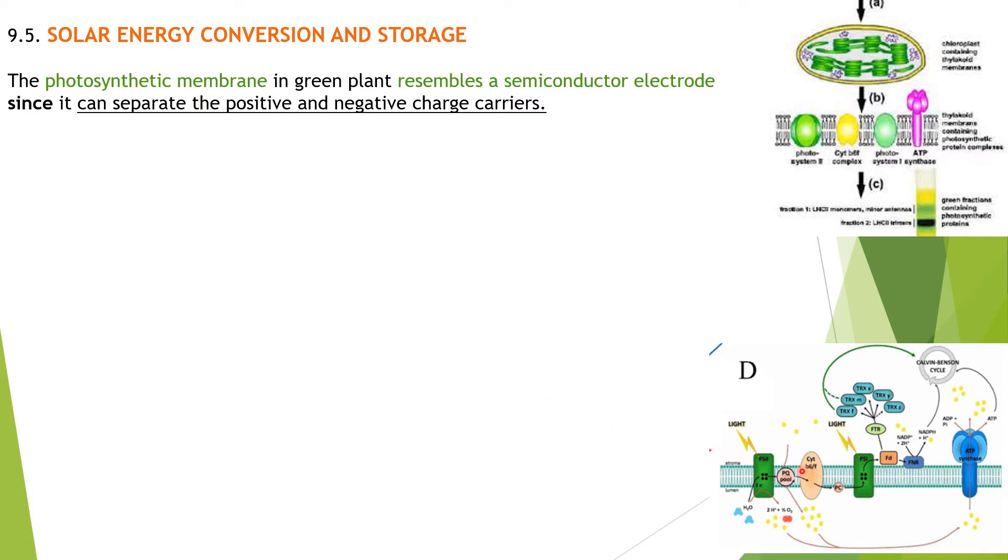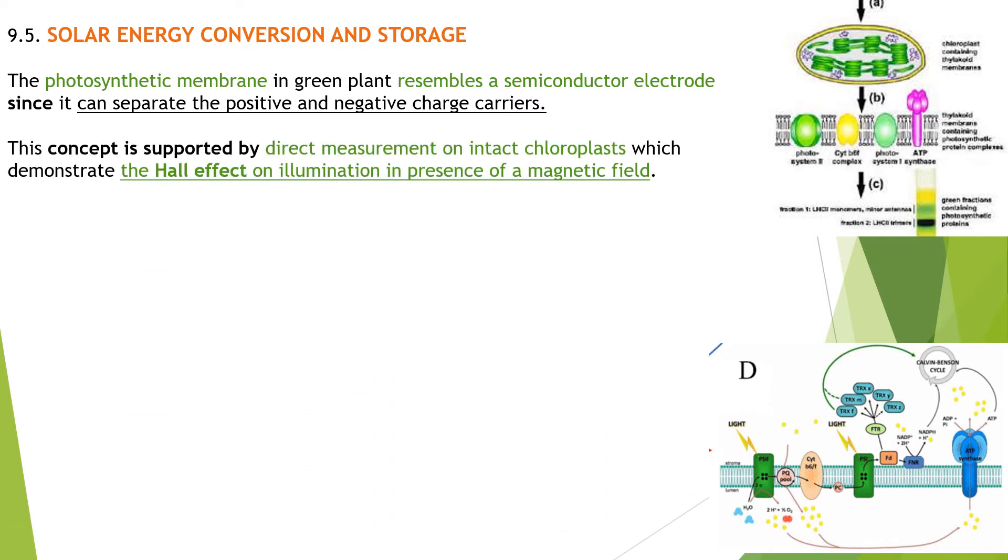This membrane is called as a thylakoid membrane and that thylakoid membrane, it resembles that of a semiconductor electrode since it can separate the positive entity as well as the negative charge carriers. This concept of the photosynthetic membrane working as a semiconductor electrode separating the positive and negative charge carriers is explained by the Hall effect.